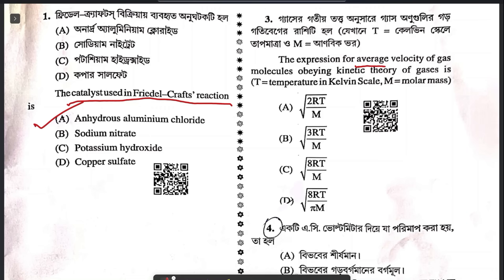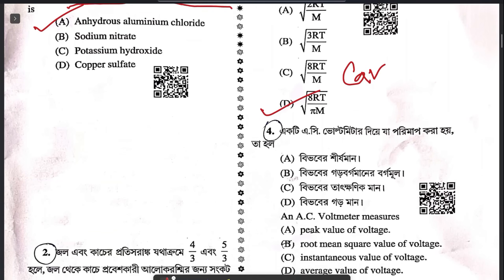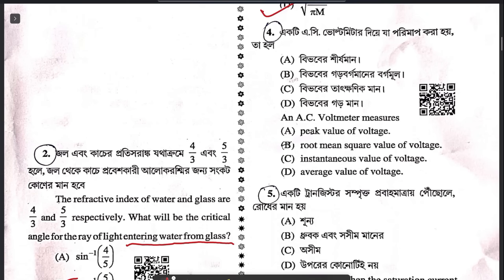Third question: the expression for average velocity of gas molecules having kinetic energy. They are seeking C-average. C-average is basically √(8RT/πM). The answer is D.